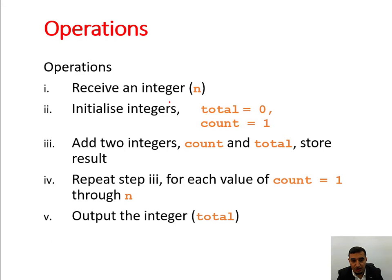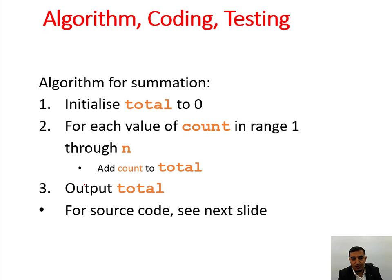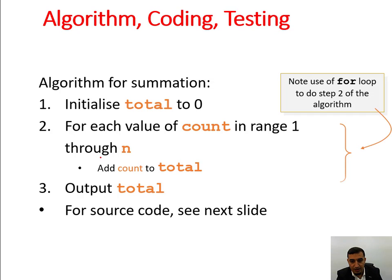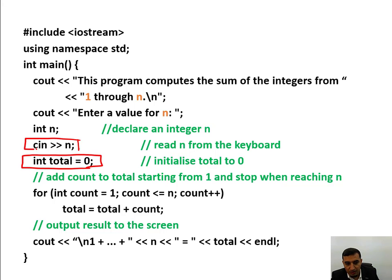First we get the integer — how many numbers we want to process. Then we initialize the total. Remember, if you do not initialize the total you will end up with a garbage starting value. We start the counter at 1 and repeat until done. The syntax: enter the number, initialize total to zero, and sum the numbers from 1 up to n.